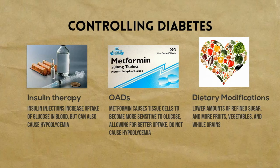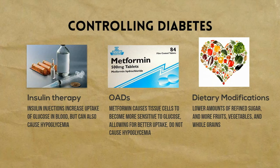Insulin must be injected into the body, usually every day. Alternatively, there are oral hypoglycemic drugs, such as metformin, that can cause the cells in your body to become more sensitive to insulin and allow for better uptake of glucose from the blood. Unlike many other diabetes drugs, metformin does not risk causing hypoglycemia as a side effect.